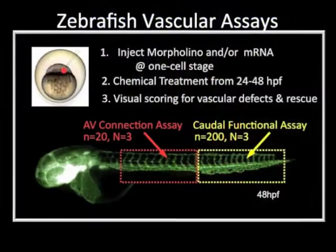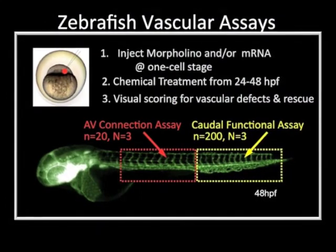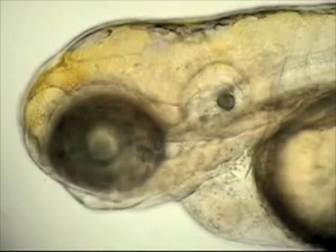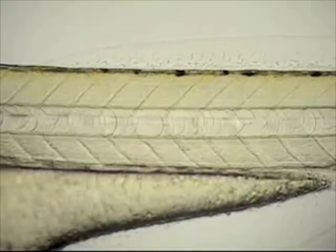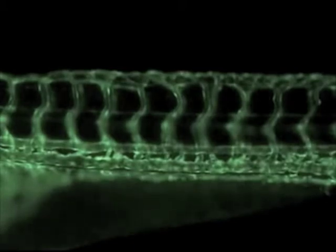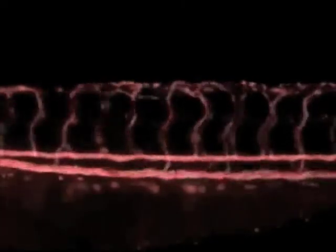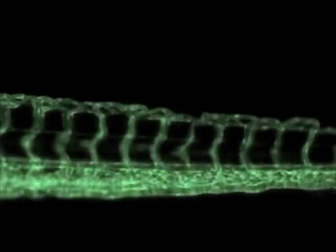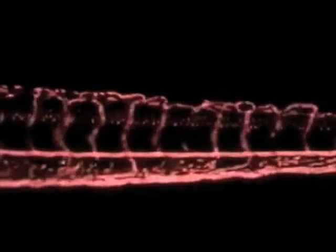What we used is a zebrafish model. We inject antisense morpholinos into the eggs at the one-cell stage. This is a three-day-old zebrafish embryo, about three to four millimeters long. The fish is double-labeled with green for blood vessels and red for red blood cells. This is the region where June was looking at AV connection — the arteries and veins going up and down are distinctly one type or the other. In the caudal region you can see blood flow all the way through to the tail, and in this assay she is figuring out whether our embryos have complete flow to the tail.